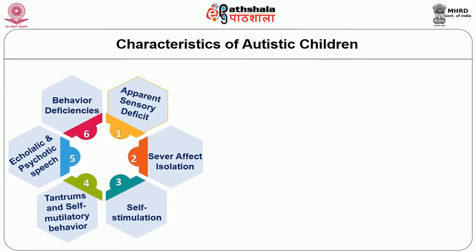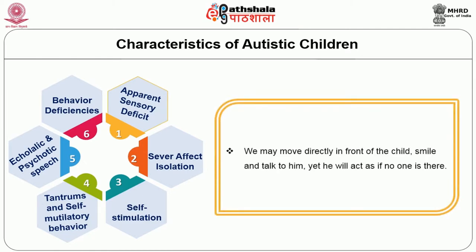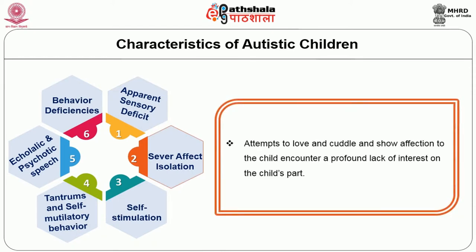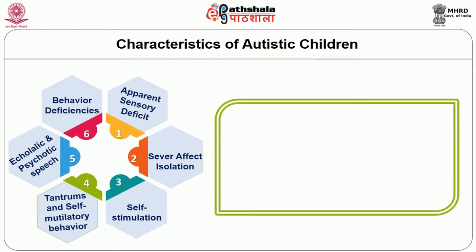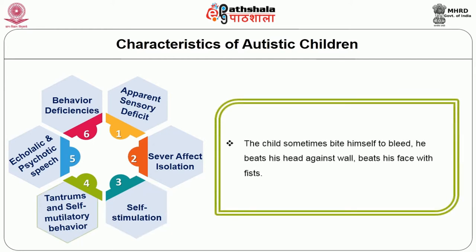Six frequently observed characteristics of children with autism have been described. First, apparent sensory deficit: one may move directly in front of the child, smile and talk to him, yet he will act as if no one is there. Second, severe affect isolation: attempts to show love and affection to the child encounter a profound lack of interest on the child's part. Third, self-stimulation: these children exhibit repetitive stereotyped acts such as rocking their bodies, twirling around, flapping their hands at the wrist or humming.